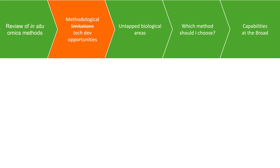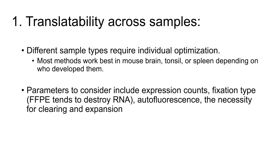There's a lot left to do in terms of tech development at almost every stage of the process. One of the biggest problems is that it's difficult to translate these approaches across different systems — because you're not taking the sample out of native context, different samples have different levels of autofluorescence, different RNA activity, they may require staining or expansion, and may have lower or higher expression levels. It's proven challenging to move out of whatever context the assay was originally developed in. Fortunately, a lot of the method development is being done in brain, so if you want to do mouse brain studies you're probably in a good position.